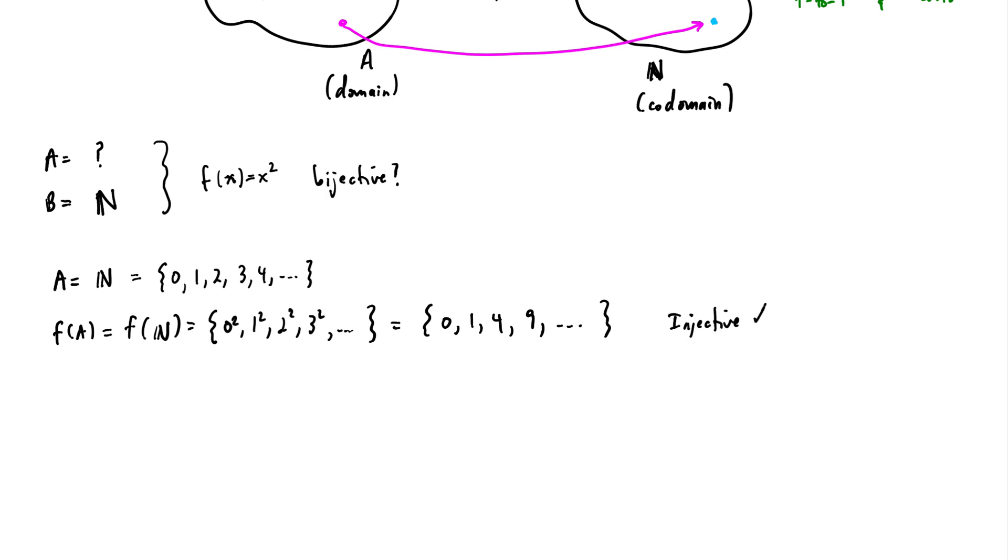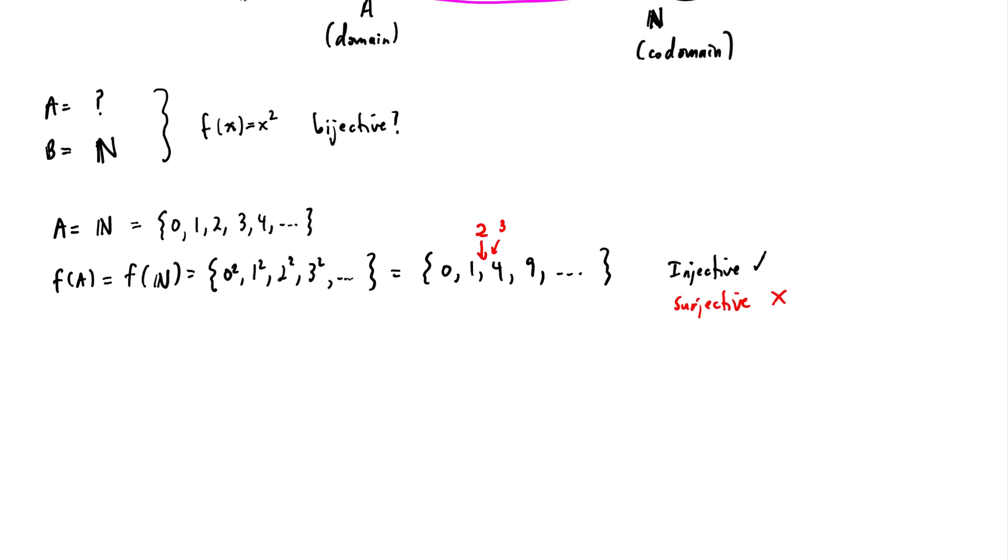But it is not surjective. Why is it not surjective? Because 2 is not here. 3 is not here. And as you go along, these gaps get even bigger. So all you need to see is one missing point from the codomain to know that it's not surjective. So this is not a surjective function. What else could we do?